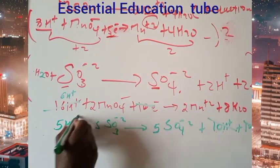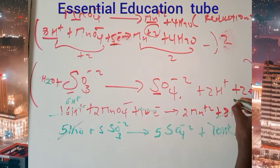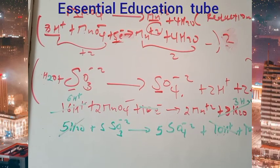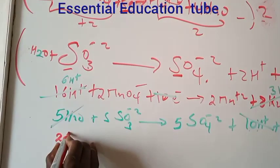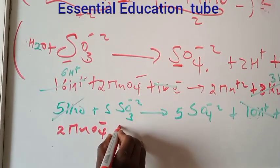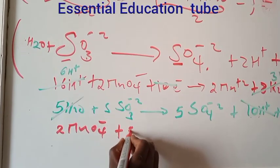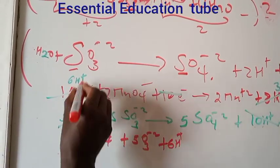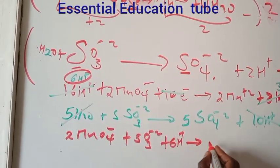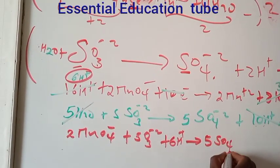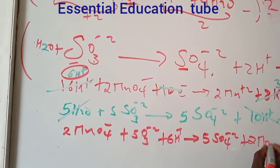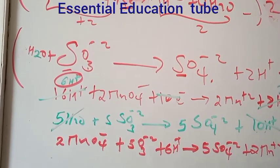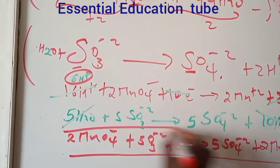Combining the two half-reactions: 2MnO4⁻ plus 5SO3²⁻ plus 6 moles of hydrogen plus ion gives 5 moles of sulfate minus 2, plus 2 moles of manganese plus 2, plus 3 moles of water. The equation is balanced.